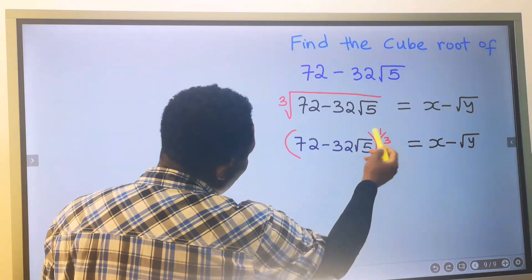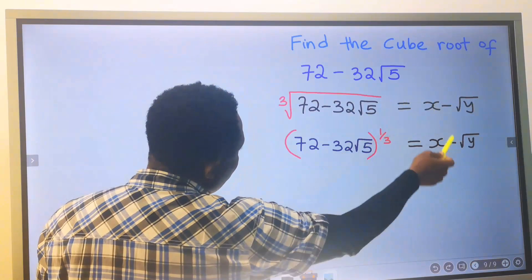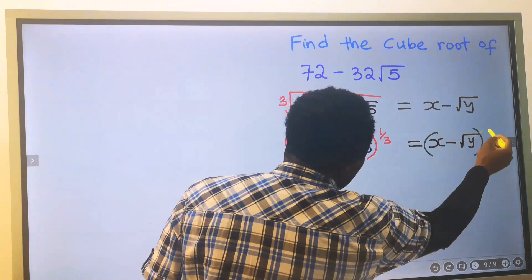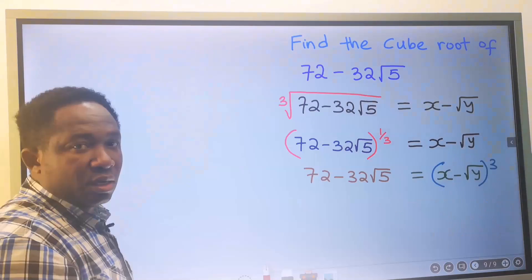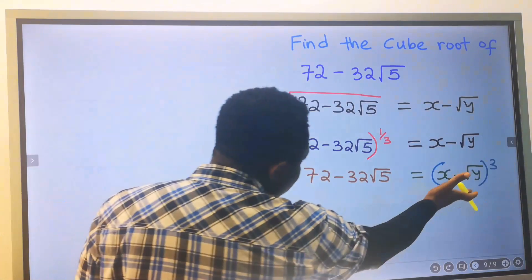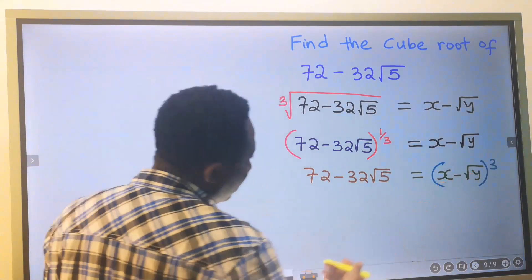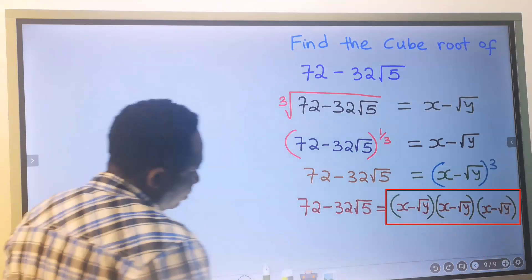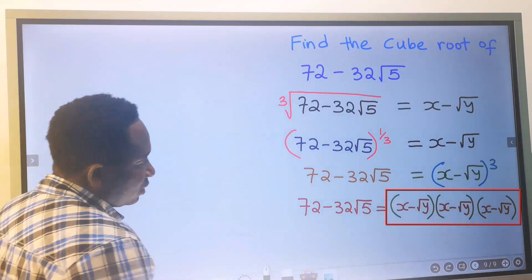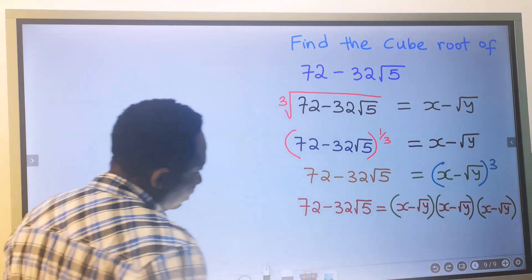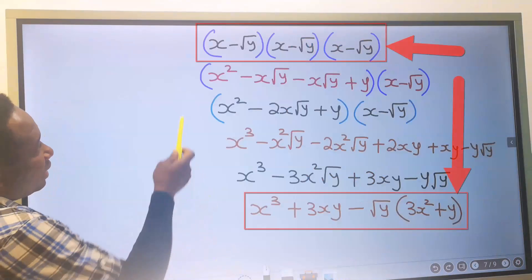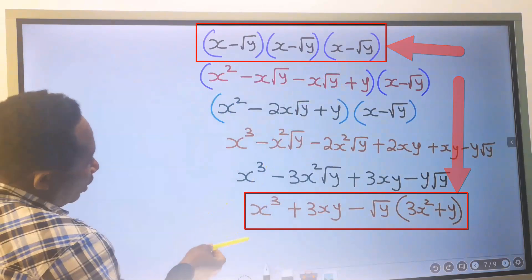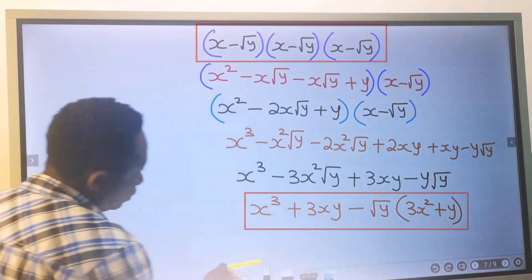Next, we're going to remove this cube root, and on the other side it will become to the power of 3. This is the same thing as expanding this 3 times. Next, we're going to simplify this — expanding this 3 times will give us this result.